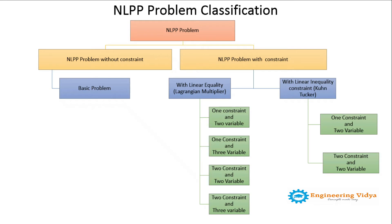An NLPP problem without constraint has only one type and is considered the basic problem. For NLPP problems with constraints, the next question is whether the constraint has an equality sign or an inequality sign. If the NLPP problem has an equality sign, it can be solved with the help of the Lagrangian multiplier method.